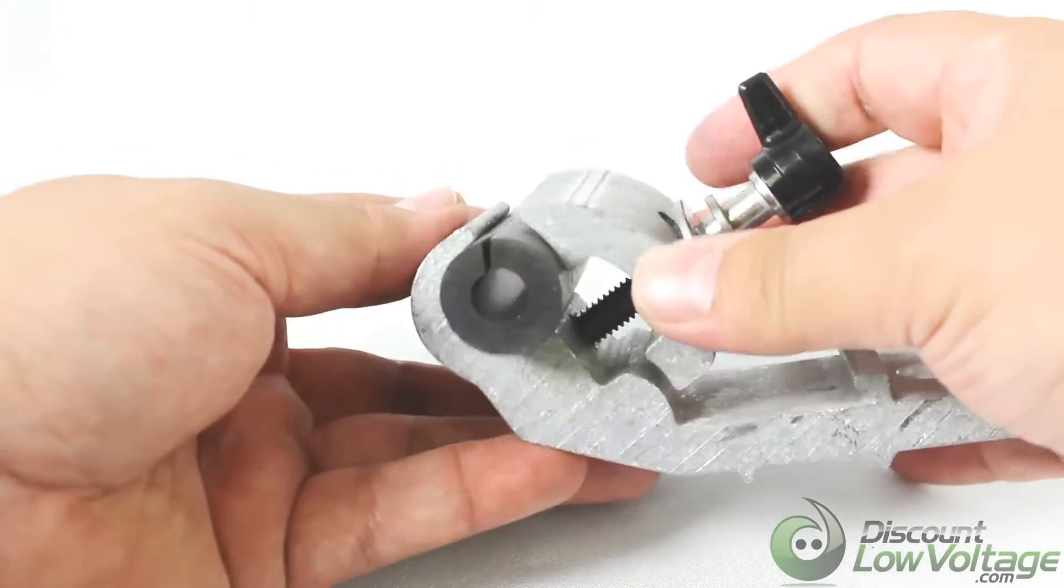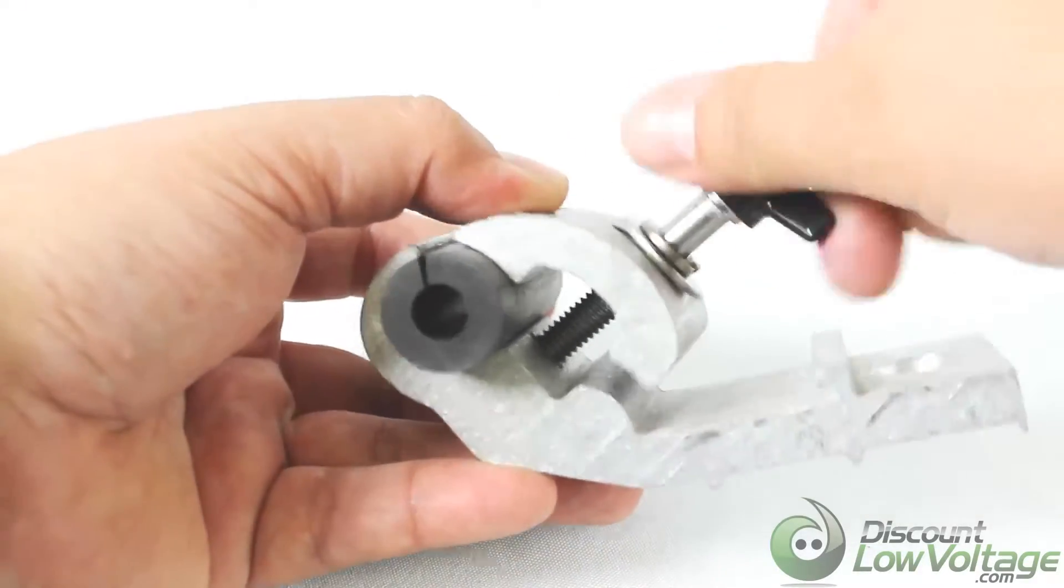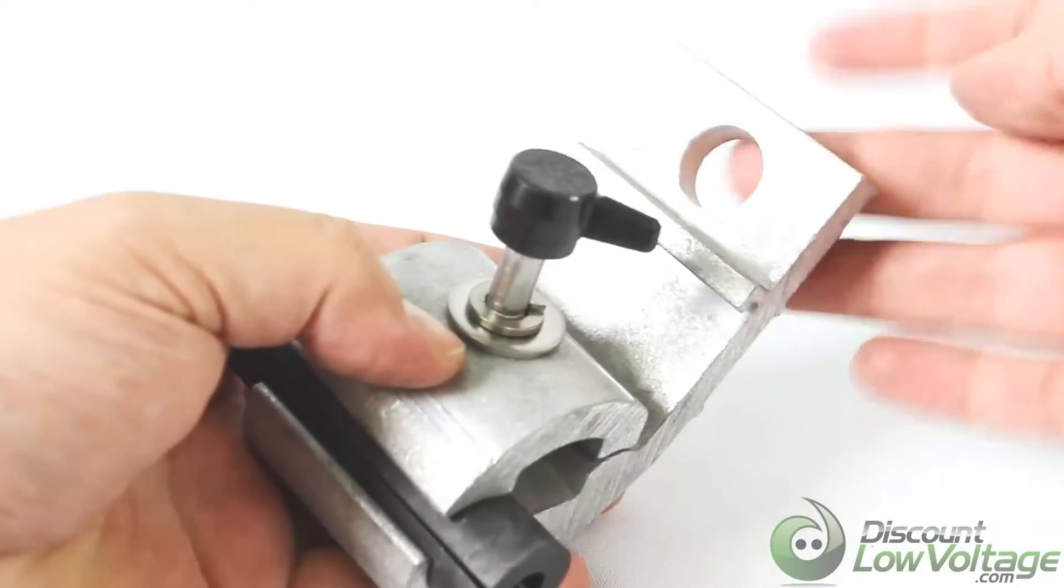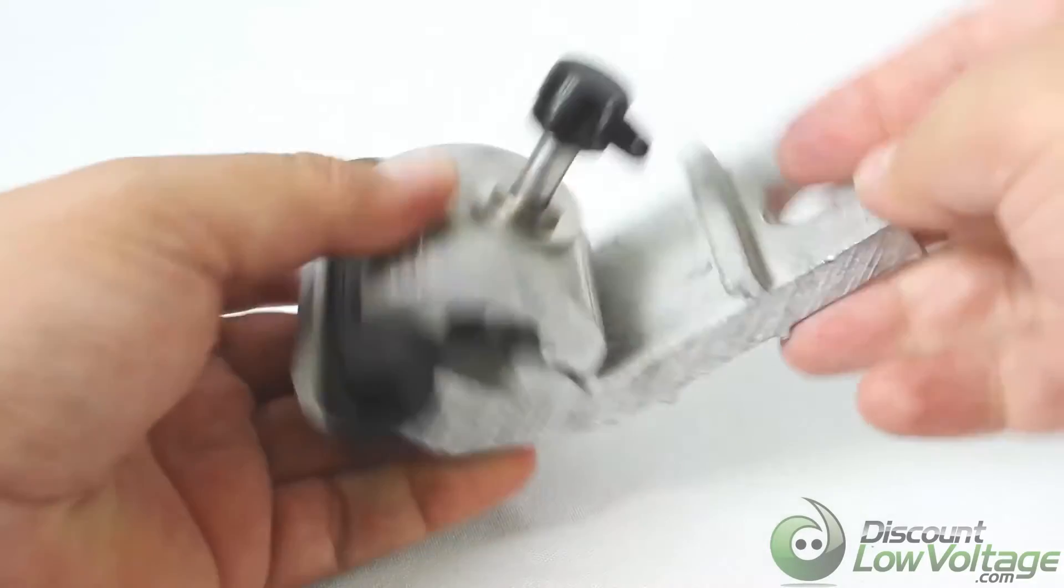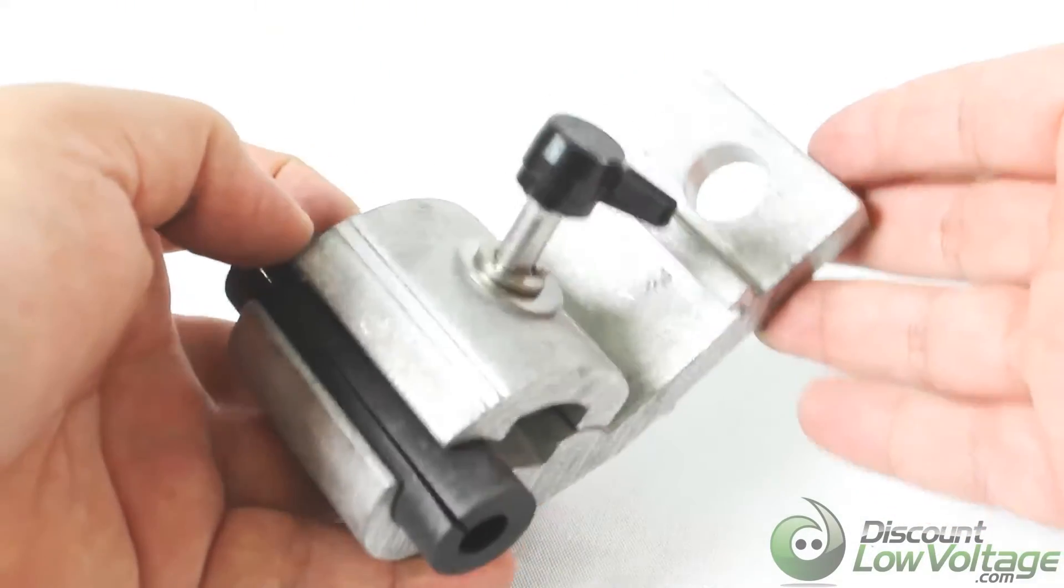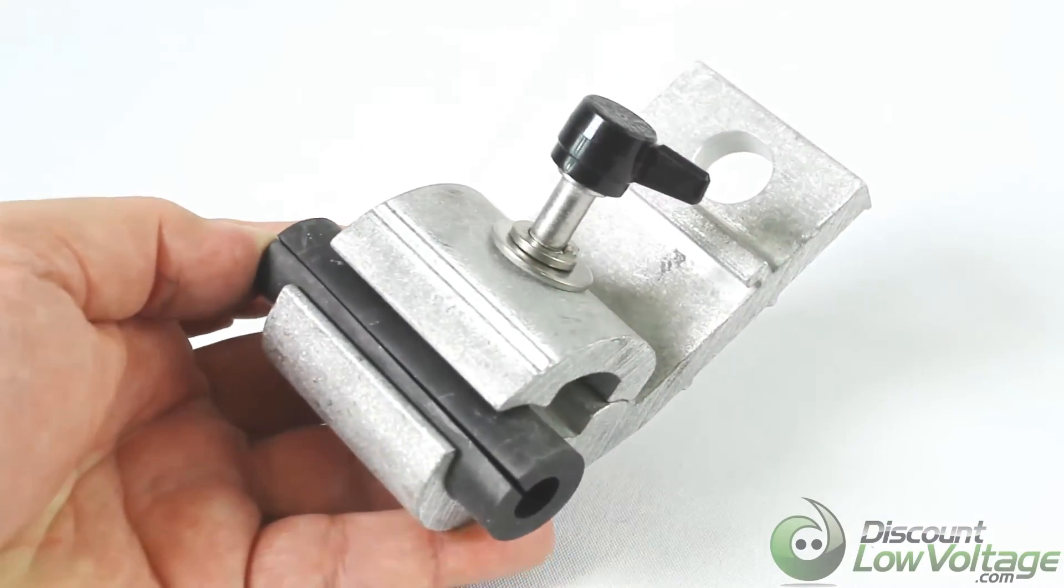You want to put your cable through there, tighten it down properly, then your bolt would go right through there. For more detailed spec sheet and to order online, visit discountlowvoltage.com.